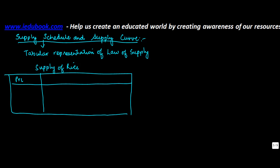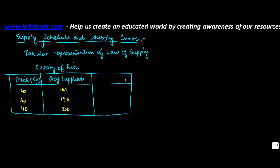Let's take rice price per kg on one side and quantity supplied on the other. Say the price of rice was 20, 30, and 40 rupees per kg. At these prices the quantity supplied was 100, 150, and 200. As the price increased from 20 to 30, the quantity supplied increased, and similarly as price increased from 30 to 40 the quantity supplied increased.